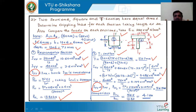Substituting the values here, pi squared EI by Le squared gives the load as 56.5. The crippling load according to the rectangular section is 13.83 and for the T-section it is 56.5. Taking the ratio, it is 4.1, meaning the crippling load for the T-section is 4 times greater than the crippling load for the rectangular section. This is an important problem. They can ask different problems on different types of sections.